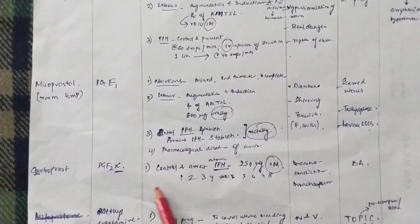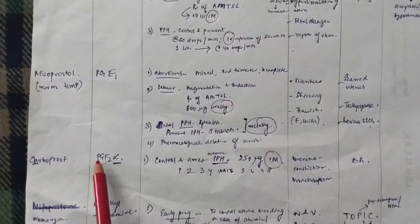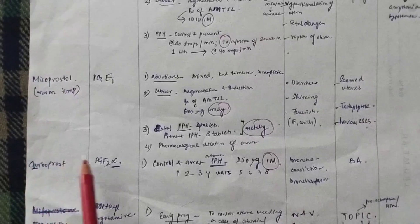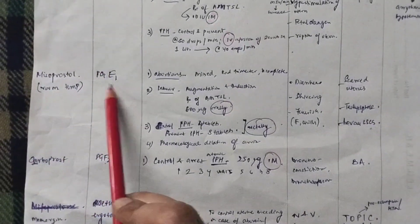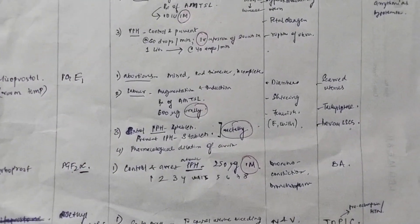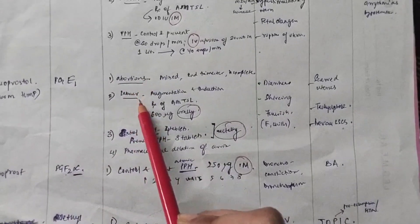Basically, you see carboprost is C. And PGF2 alpha is A for alpha. So, you can remember carboprost is PGF2 alpha. The rest is PGE1. That is misoprostol. So, as I told you, they are used in abortions and labor and PPH.